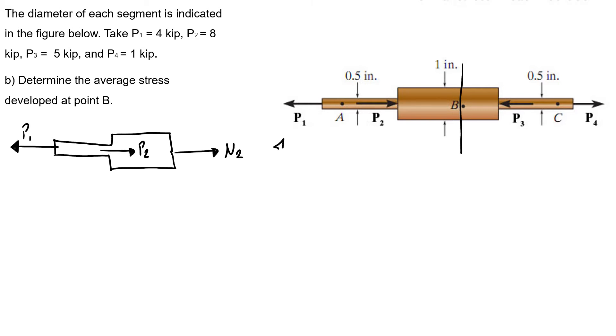So the sum of forces equals zero. We have P1 minus N2 minus P2 equals zero. So we have that N2 equals P1 minus P2. N2 equals 4 minus 8, so N2 equals negative 4 kip.